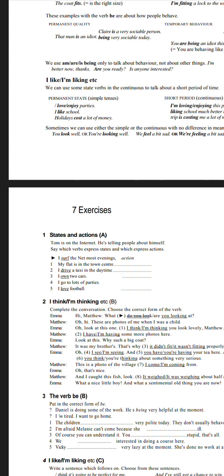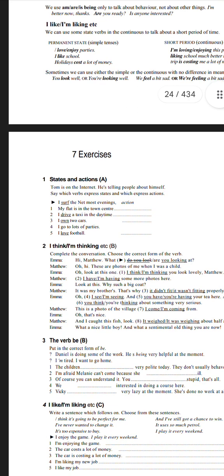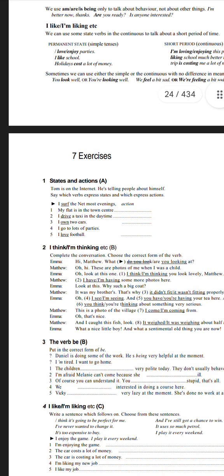Complete the conversation to the correct form of the verb. Emma: Hi Matthew, what are you looking at? Matthew: Oh, this is a photo of me when I was a child. So you have to say 'are you looking at?'